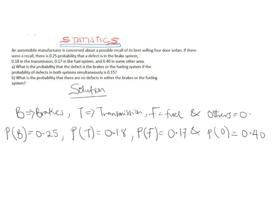For part (a), we need to find the probability that the defect is in the brakes or the fueling system — meaning either one or the other — given that the probability of the defect being in both systems simultaneously, the intersection of brakes and fueling, is 0.15.